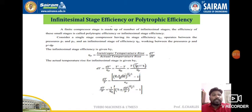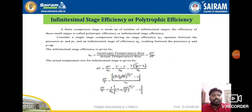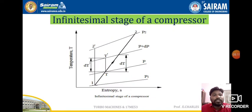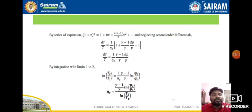Rearranging, dt-dash can be split as t times (t-dash/t minus 1) divided by efficiency of p, which equals t times (t-dash/t minus 1) divided by efficiency of p. Sending t to the other side, dt/t equals the expression where t-dash in terms of pressure is (p plus dp)/p raised to the power of (gamma minus 1)/gamma, minus 1, divided by polytropic efficiency. Taking out the efficiency term: dt/t = (1/efficiency_p) times [(1 plus dp/p) raised to (gamma minus 1)/gamma minus 1].